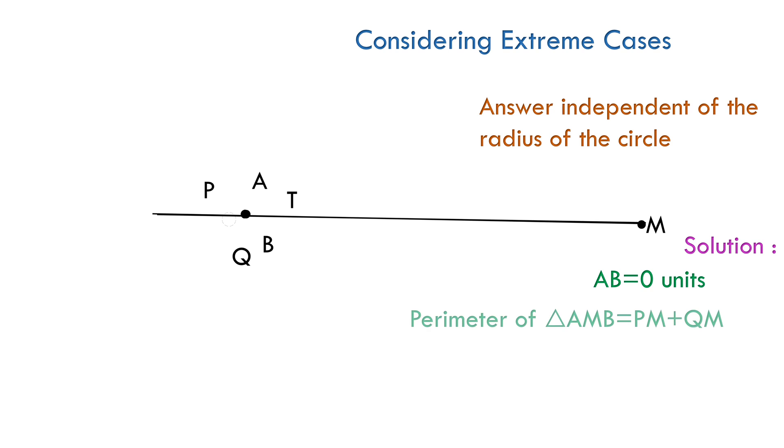So the perimeter of the triangle AMB will be PM plus QM equals 10 plus 10 equals 20 units.